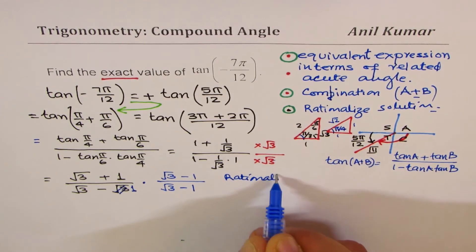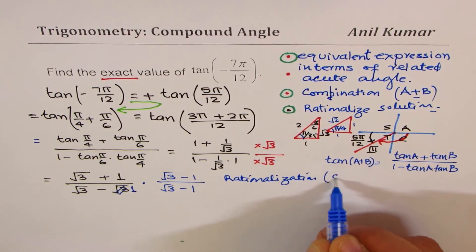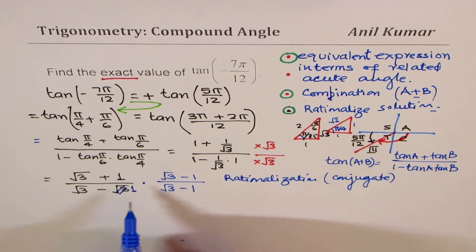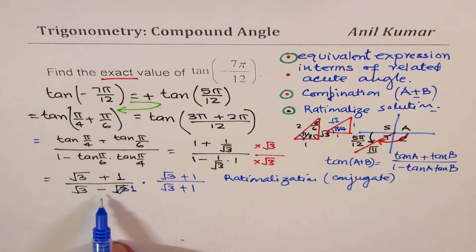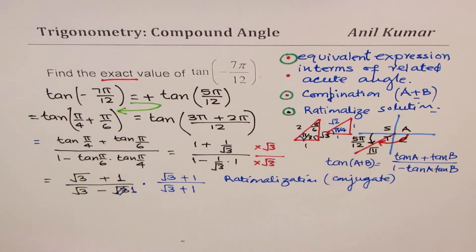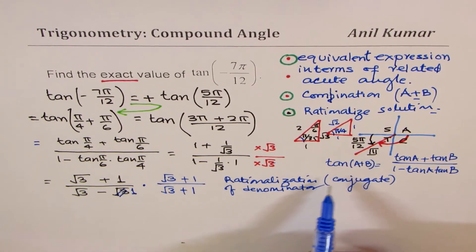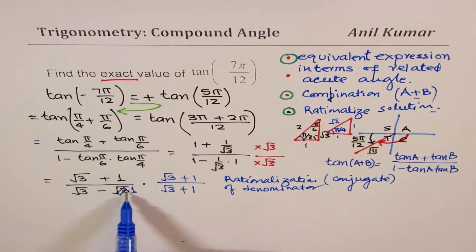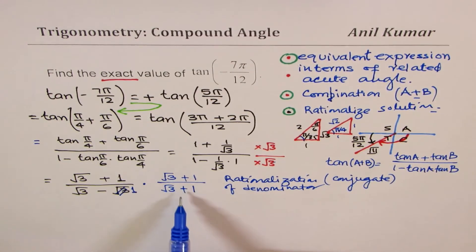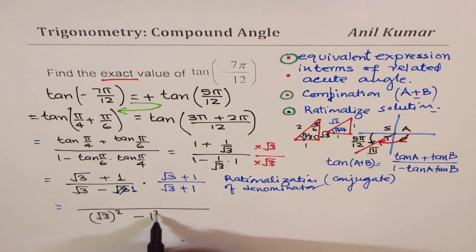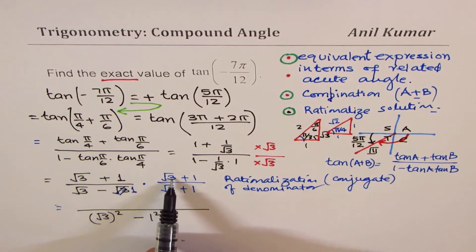Now let us rationalize. We have to multiply and divide by the conjugate of this denominator. We don't want to see square root term in the denominator. So denominator √3 minus 1, we multiply by √3 plus 1 both numerator and denominator. That product in the denominator will give you difference of squares.